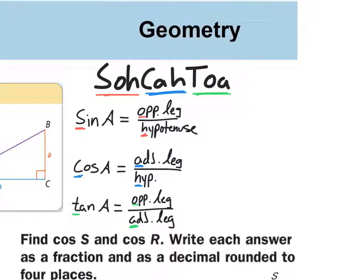Something to remember: sine, cosine, tangent — what are these things? They are ratios. What are ratios? Fractions. They're fractions. So we have different fractions for these different names, these different ratios: sine, cosine, and tangent. And SOHCAHTOA is a wonderful way to remember this.